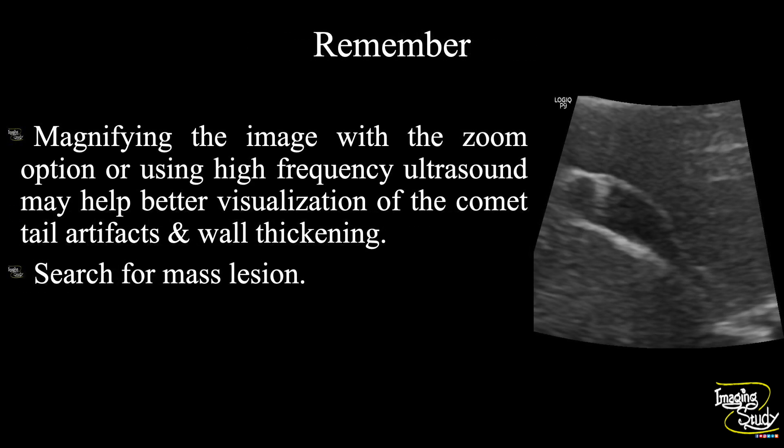The take-home message: magnifying the image with the zoom option or using high frequency ultrasound may help better visualization of the comet tail artifacts and the wall thickening. Try to use the zoom option of your machine when searching for this type of calcification. Adenomyomatosis is a feature of chronic cholecystitis, so in this type of case always search for calcifications. When you find adenomyomatosis, don't forget to search for gallbladder stones and calcifications.